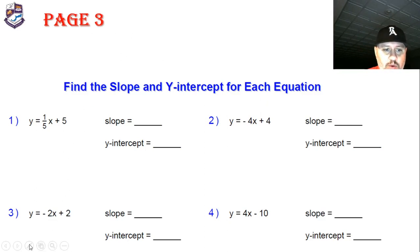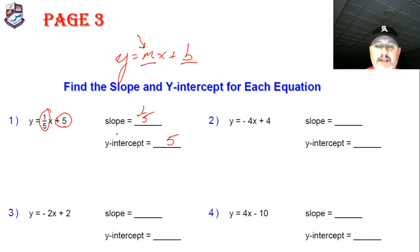When we write something in slope intercept form, all we have to do is write down y equals mx plus b, where m is the slope and b is the y-intercept. So this number in front of x is always the slope. Slope is one fifth and your y-intercept is the constant. In fancy terms, we could say that slope is the coefficient of x and the y-intercept is the constant.